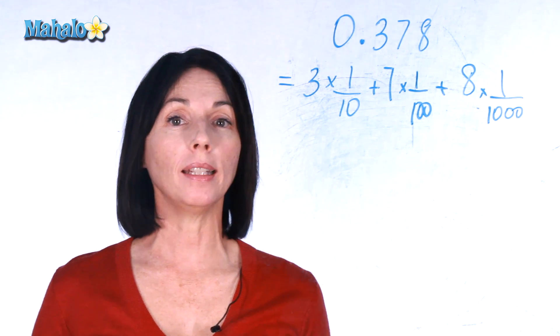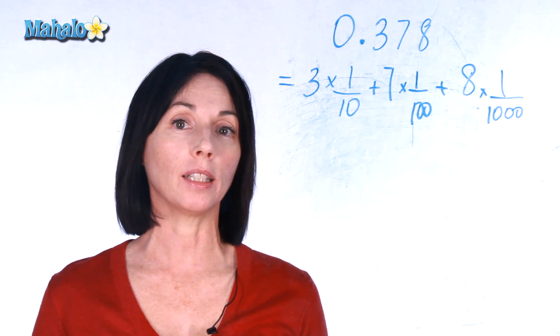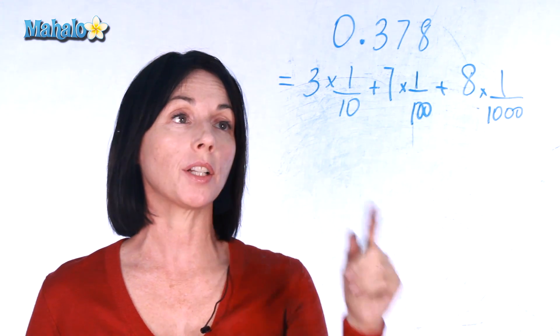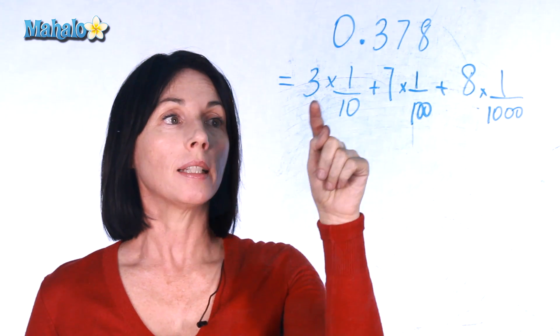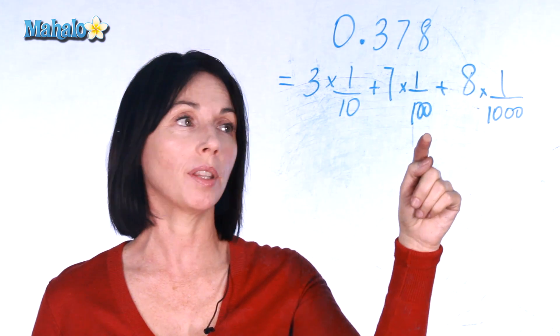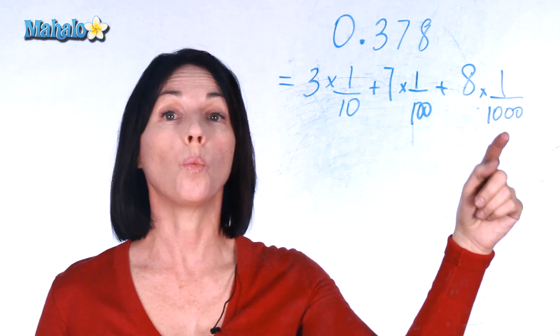So we looked at before writing a decimal in expanded form and it looks like this. Let's say we have 0.378. In expanded form that's actually equal to 3 times 1 tenth plus 7 times 1 hundredth plus 8 times 1 thousandth.